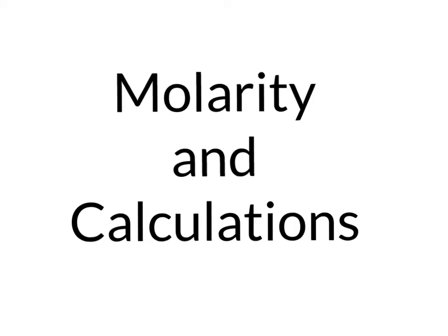In chemistry, one of the most important types of concentration is called molarity. Molarity uses the number of moles — recall that a mole is 6.02 times 10 to the 23rd of something. It never defines what that something is, but we say a mole of atoms, then it would be a mole of atoms. We can convert from mass to moles using molar mass.